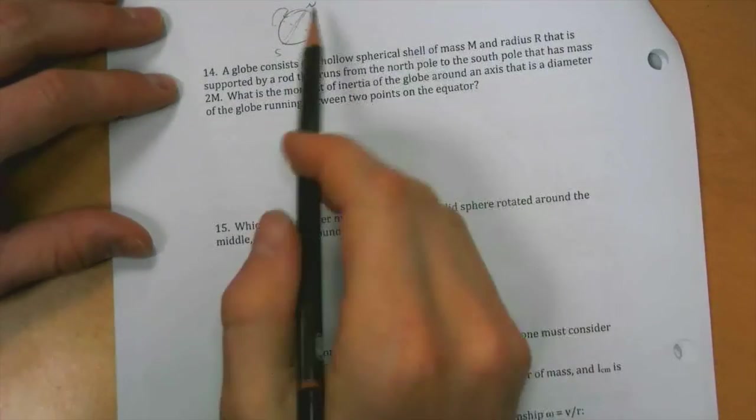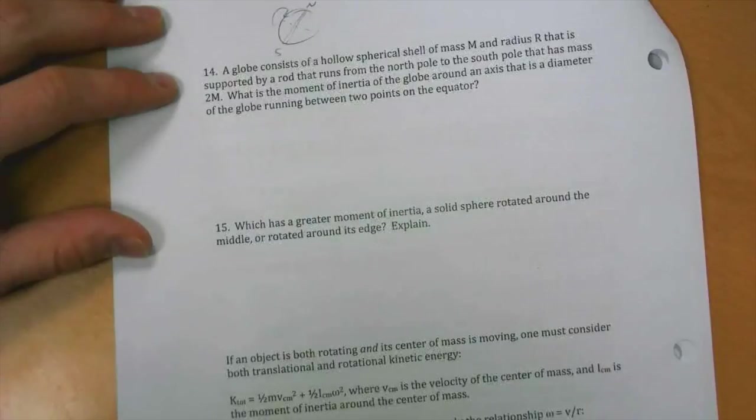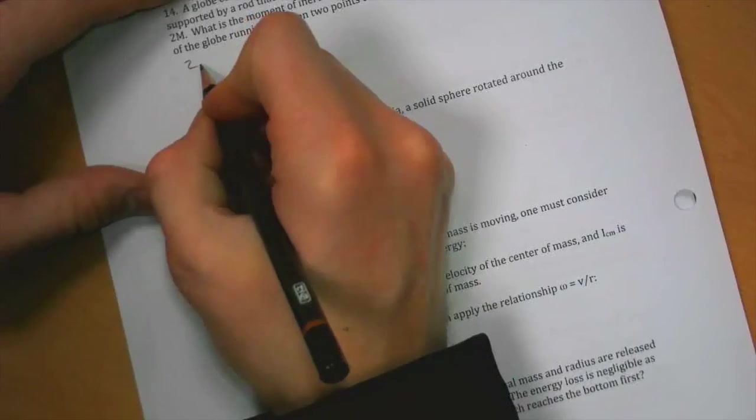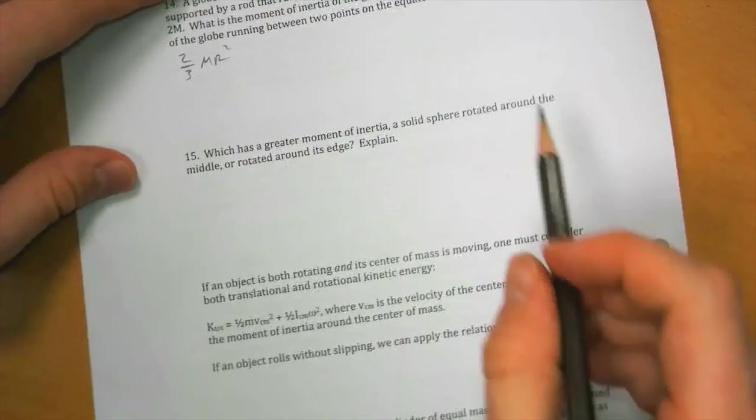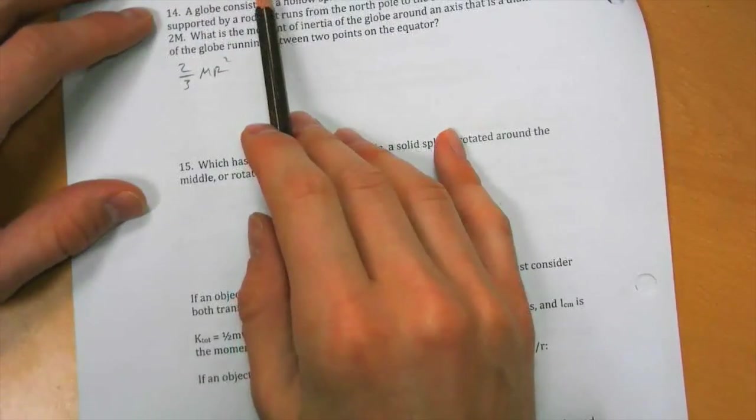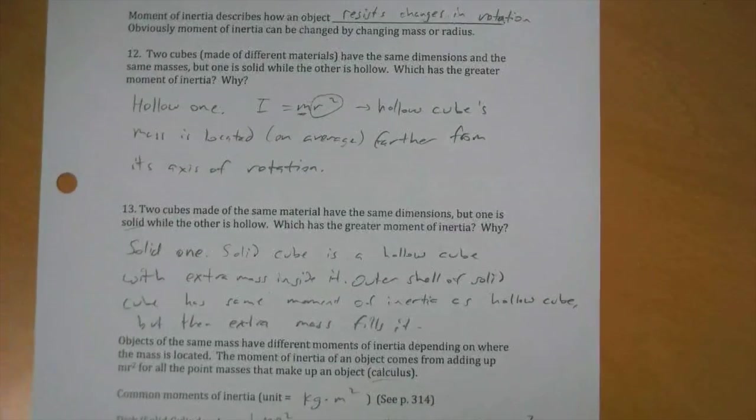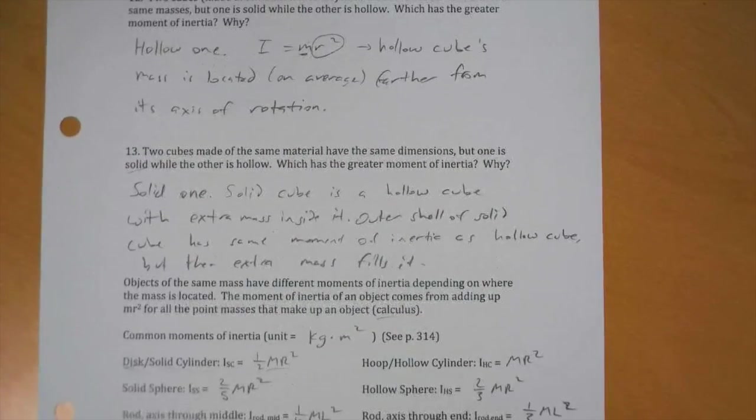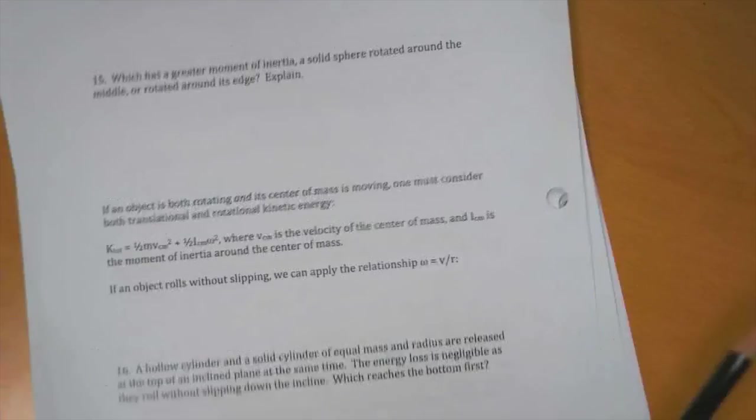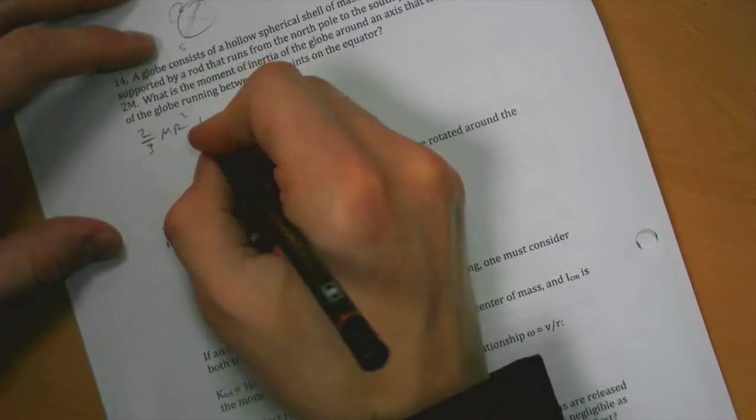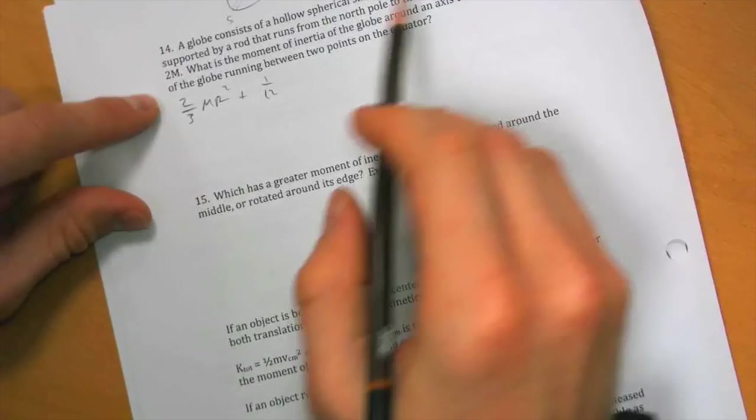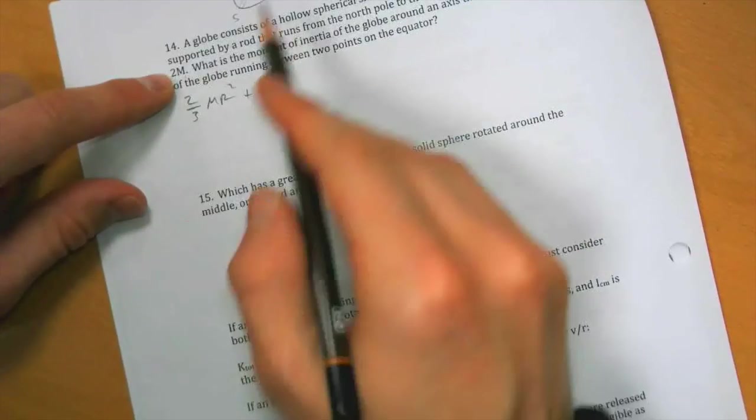Well, hollow sphere, so we look for our globe, we've got a hollow sphere, we look back at our formulas, that's two-thirds m r squared. And then we've got a rod with an axis through the middle, so the rod axis through the middle is one-twelfth m l squared, so we just add those together. One-twelfth, but the rod has mass 2m.